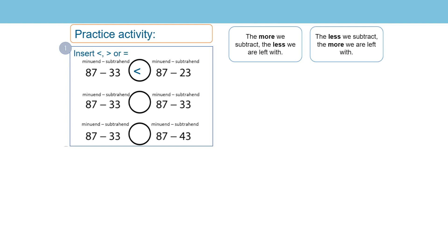Let's look at the next set of calculations. This time I can see that the calculations are the same either side. The minuend is the same in both calculations — 87 — and the subtrahend is the same in both calculations — 33. So, of course, the difference in both calculations will also be the same. So I am going to insert the equals symbol. 87 subtract 33 is equal to 87 subtract 33.